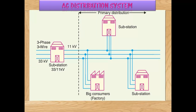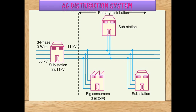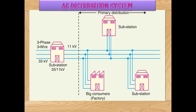As observed in the figure, it is a 3-phase 3-wire system with 33 kV and 11 kV. This is how the substations will receive power through the main substation.